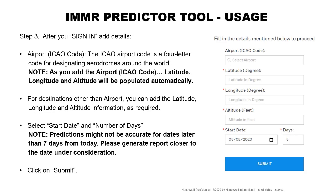After you sign in, add in the four-letter airport ICAO code and you will see that the latitude, longitude, and altitude will automatically be populated if you're using Google Chrome. For destinations other than an airport, you can add in the latitude, longitude, and altitude information as required. Then select the start date and the number of days. Note that up to 30 days is available, but predictions may not be accurate for dates later than seven days from today, so please generate a report closer to the date under consideration. Then click Submit.